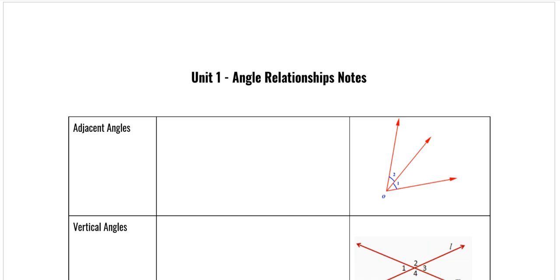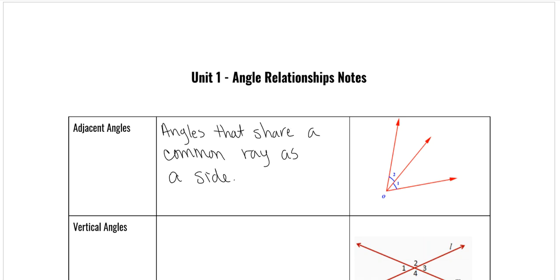So let's start with adjacent angles, and those are angles that are next to each other and share a side — in other words, they have a ray in common as a side. This is misleading because it looks like they're congruent, but they don't have to be congruent. One could be one measure and one could be the other. So angle one and angle two are adjacent angles. Adjacent just means next to.